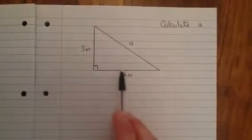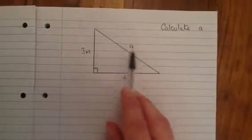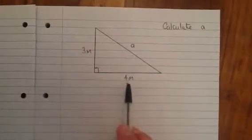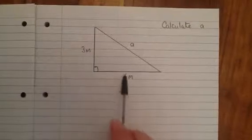First thing with all Pythagoras Theorem questions, whether you're trying to find the long side or any of the short sides, is to square whatever you have.